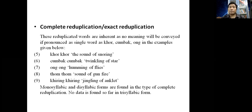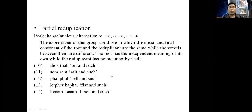Monosyllabic and disyllabic forms are found in the type of complete reduplication. However, no data is found so far in trisyllabic form. In partial reduplication, we have chains of peak or nuclear alternation from O to A, A to O, and O to E. The expressives of this group are those in which the initial and final consonant of the root and the reduplication are the same while the vowels between them are different. The root has the independent meaning of its own, while the reduplication has no meaning by itself.